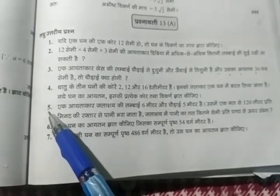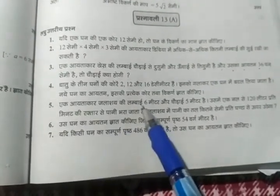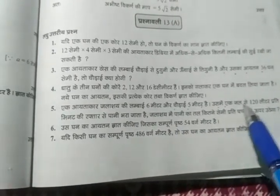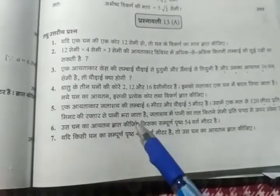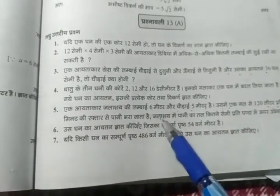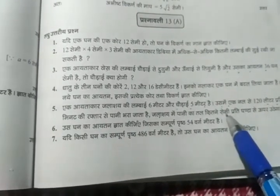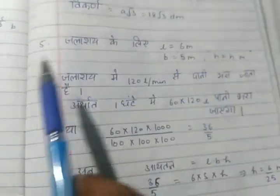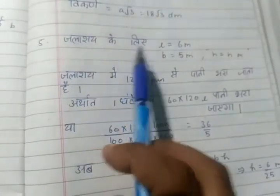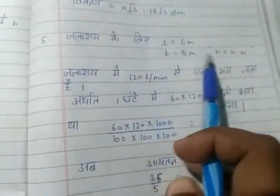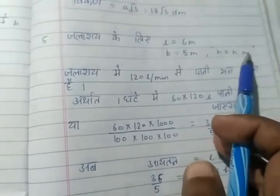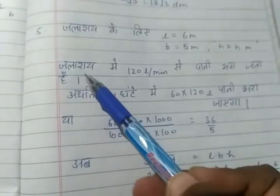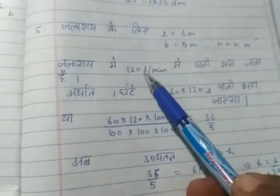Question number 5. The length is 6 meters and breadth is 5 meters. Water is pumped at 120 liters per minute. How much time does it take to raise the water level by a certain height? The length is 6 meters, breadth is 5 meters, and height is the unknown.